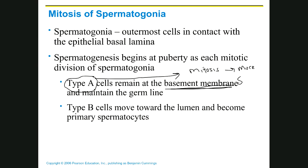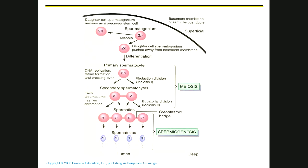An average adult male produces about 100 million sperm every 24 hours. It would not take very long to run out of spermatogonia unless you were making more of them, and we make more of those by mitosis—these are the type A cells. They stay close to the outside wall of the seminiferous tubule and just go through mitosis over and over again, making more spermatogonia.